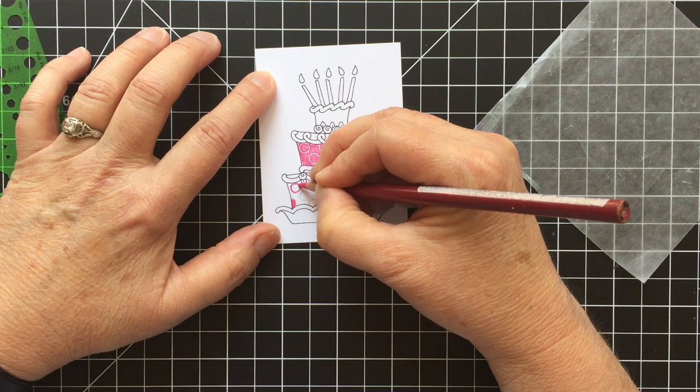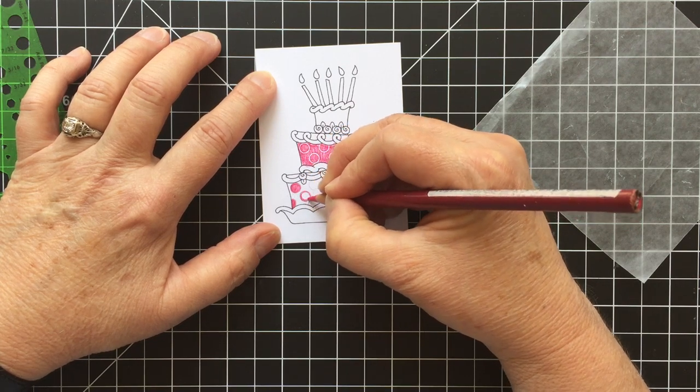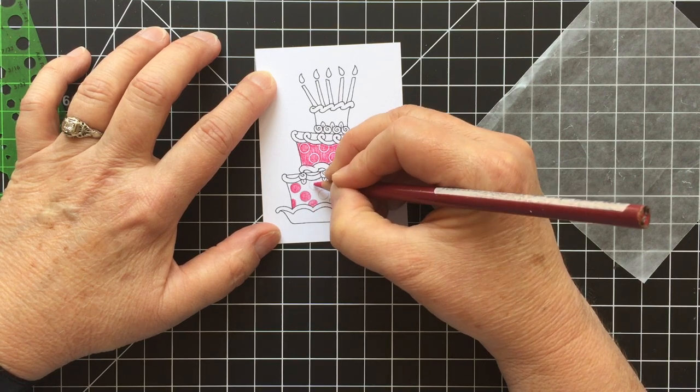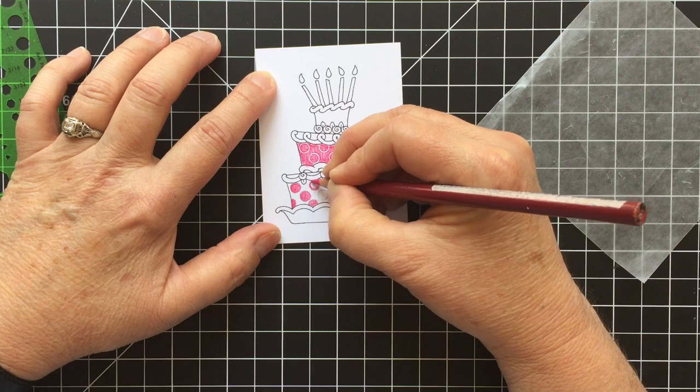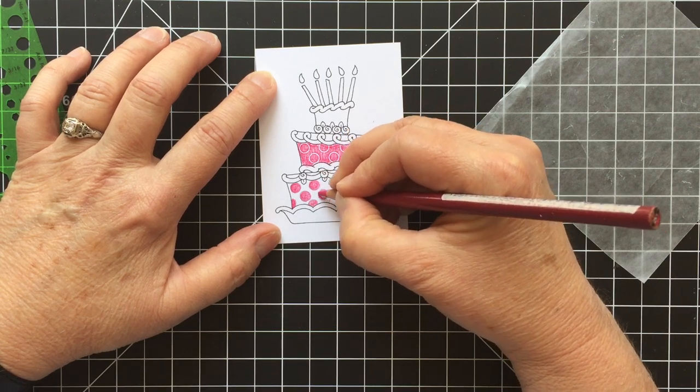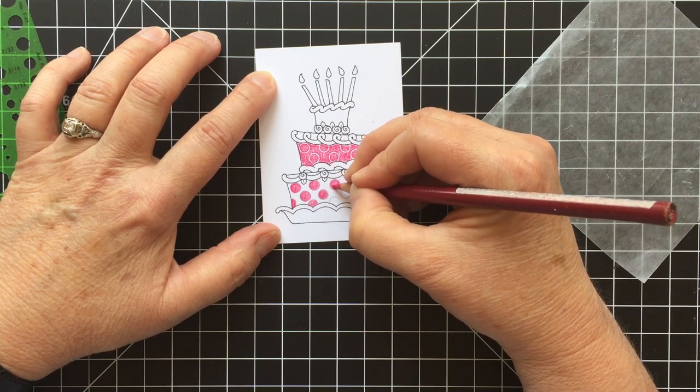So you don't even know it's there, but you've got this wonderful outline here to follow to color in your circle. You don't have to be perfect, but what it does is it helps to keep them nice and round and nice and even. And because it's sort of see-through, it's easy to space them as well.